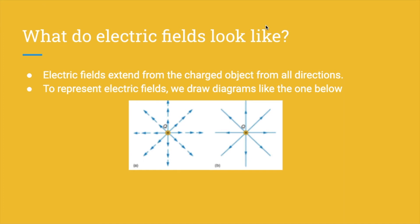Now we ask the question: what do electric fields look like? As we saw in the video earlier, we couldn't really see any physical connection between the charged sphere and the string. So how are we going to illustrate these when we draw them in diagrams? There are a couple of basic rules that we want to follow. Number one is that an electric field extends from an object in all directions — it's going to come from all different angles. To represent these electric fields, we draw diagrams like the ones below. The lines are considered the electric field lines.